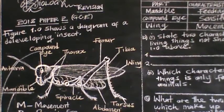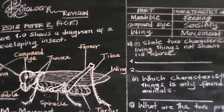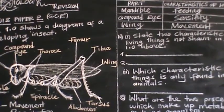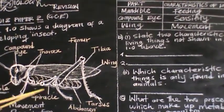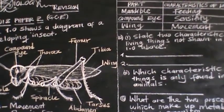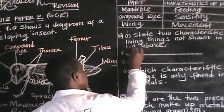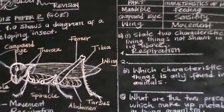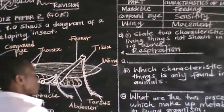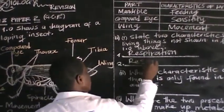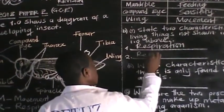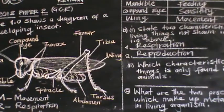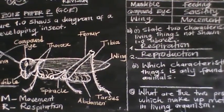Now question B says: state two characteristics of living things not shown in the figure. Meaning, out of the characteristics of living organisms, which ones are not shown by these parts? Respiration has not been shown, reproduction has not been shown, and excretion has not been shown. So we only need to state two of those.